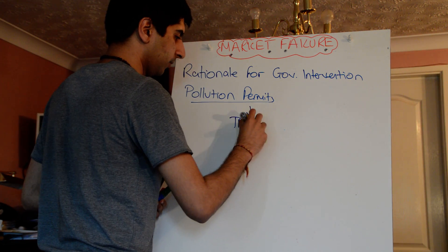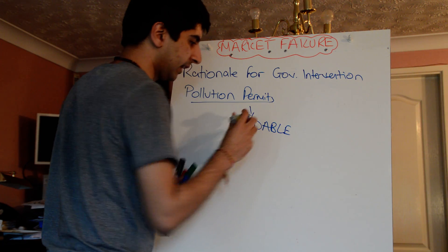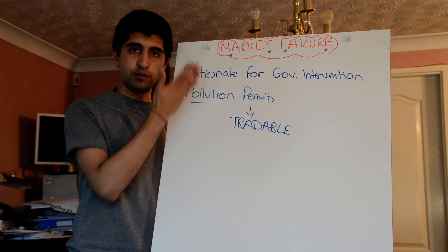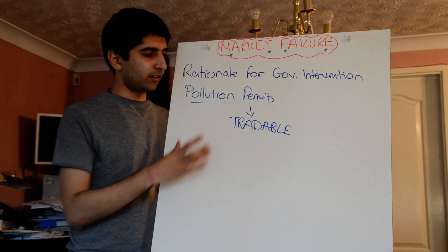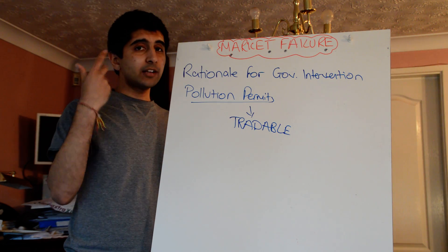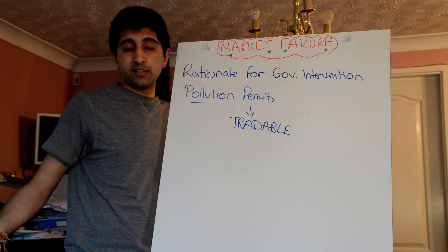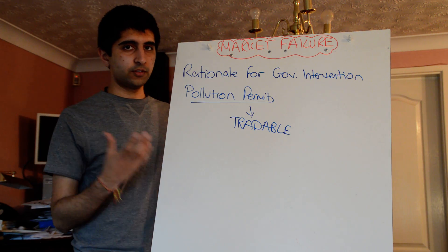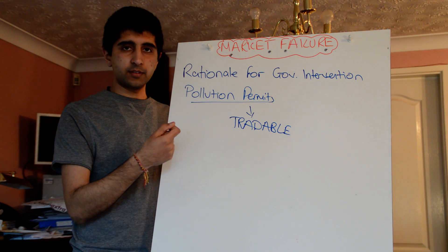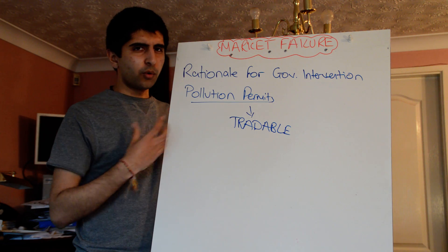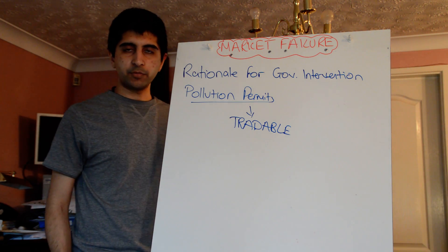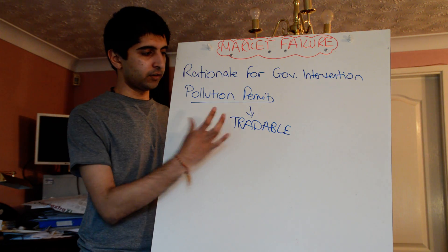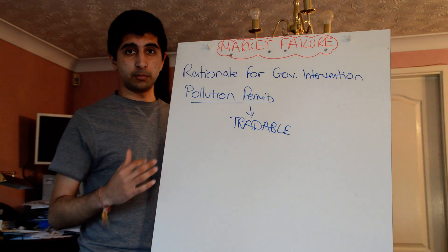The fact that they're tradable solves a lot of the problems we have with regulation-type methods, and makes them quite efficient. Consider a firm that finds it very easy to reduce pollution down to the allowed level, and a firm that finds it very difficult. The firm that finds it easy might actually reduce pollution more than what's allowed because it's very cost-effective to do so. The more expensive firm can then buy up permits from the easier firm. Therefore both firms benefit, and we're not putting a firm in danger of closing down or overburdening it with costs. It's quite an efficient way of reducing pollution.